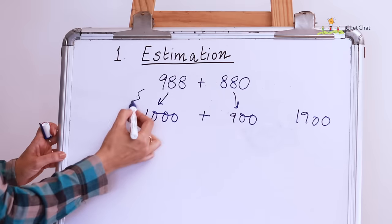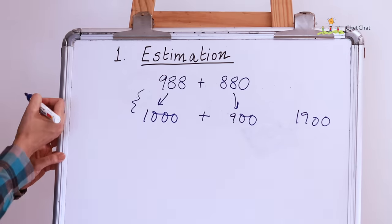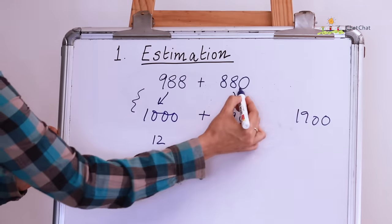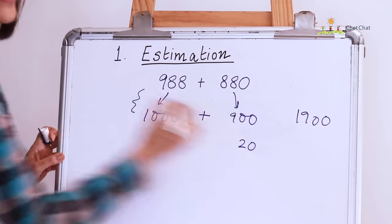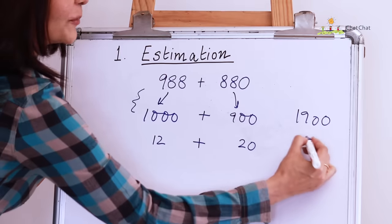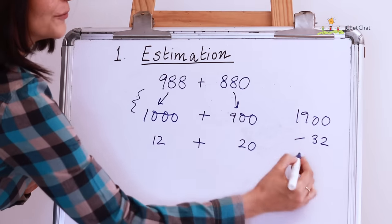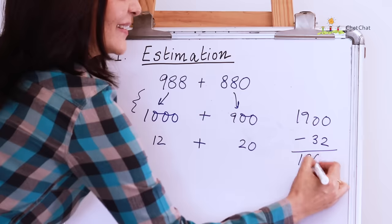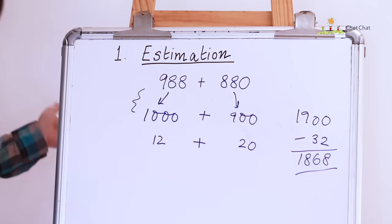Now, how much have I added here in order to get 1000? I've added 12 to 988 and I've added 20 to 880 to get 900. So, I need to subtract this 32 from 1900 and I get 1868. So, wasn't that easy?